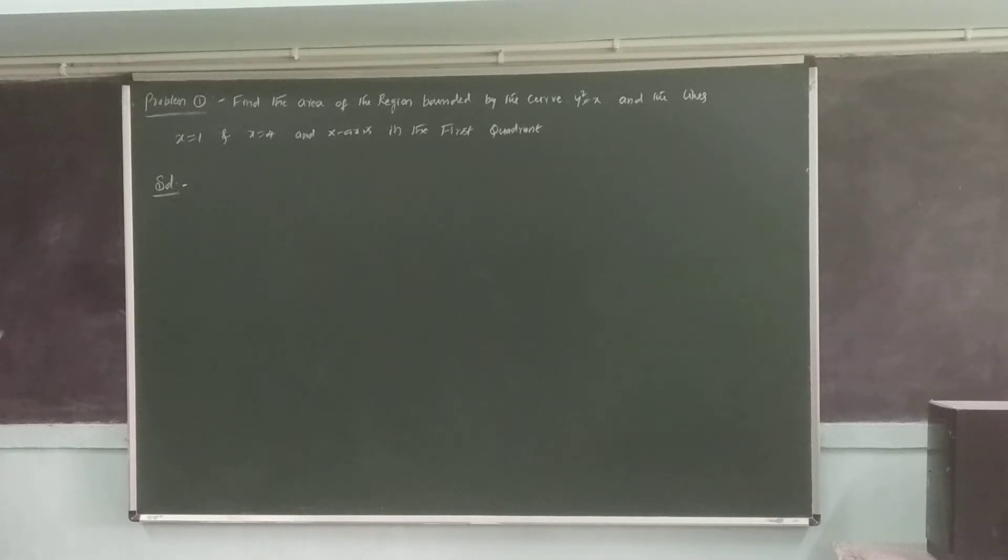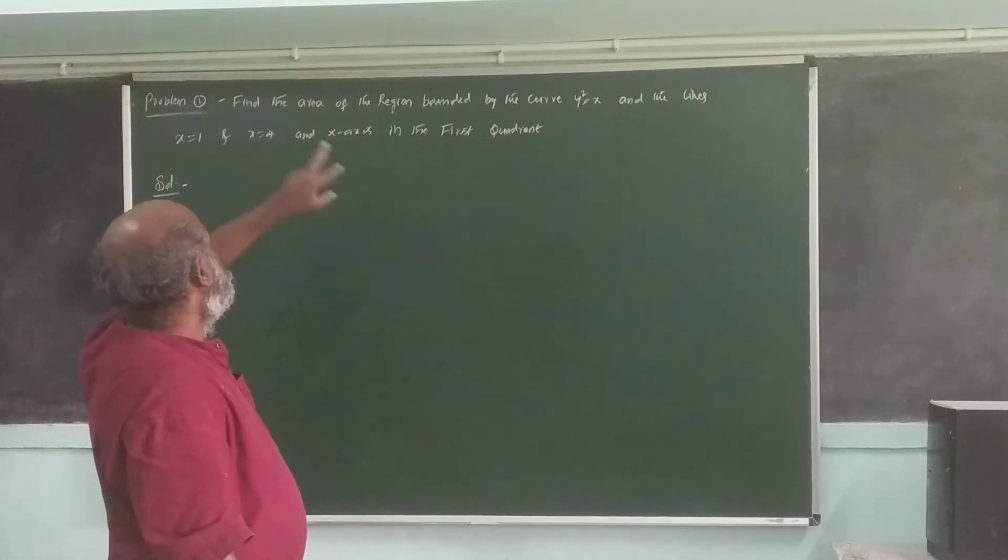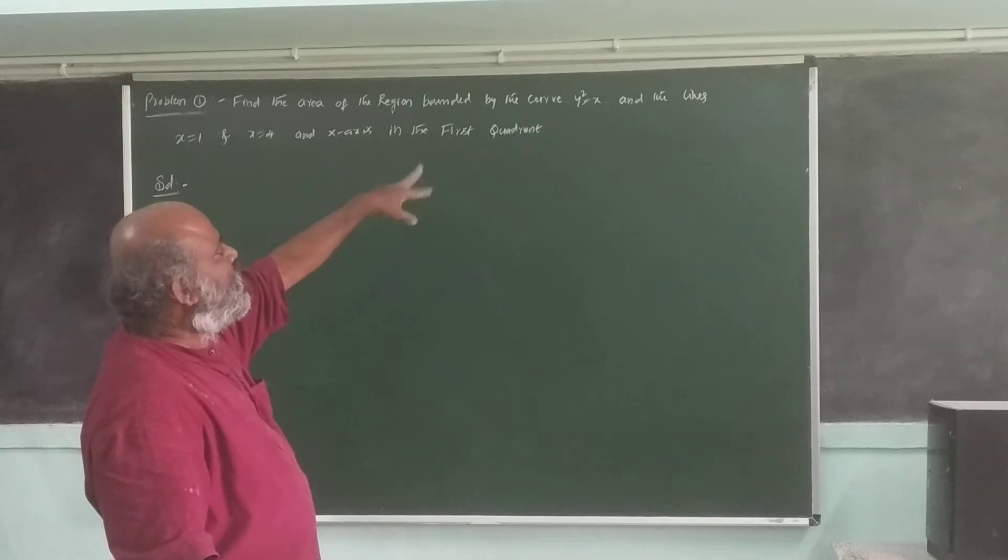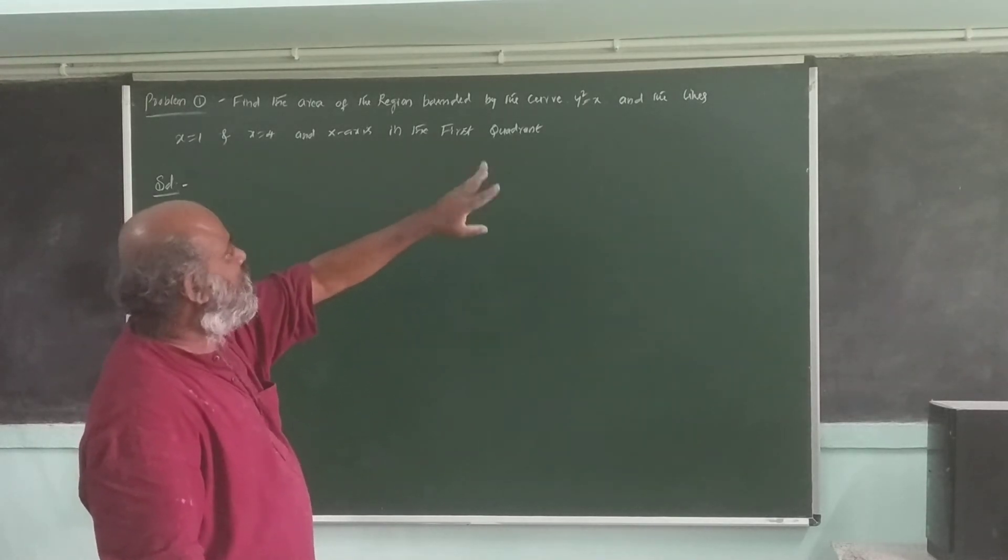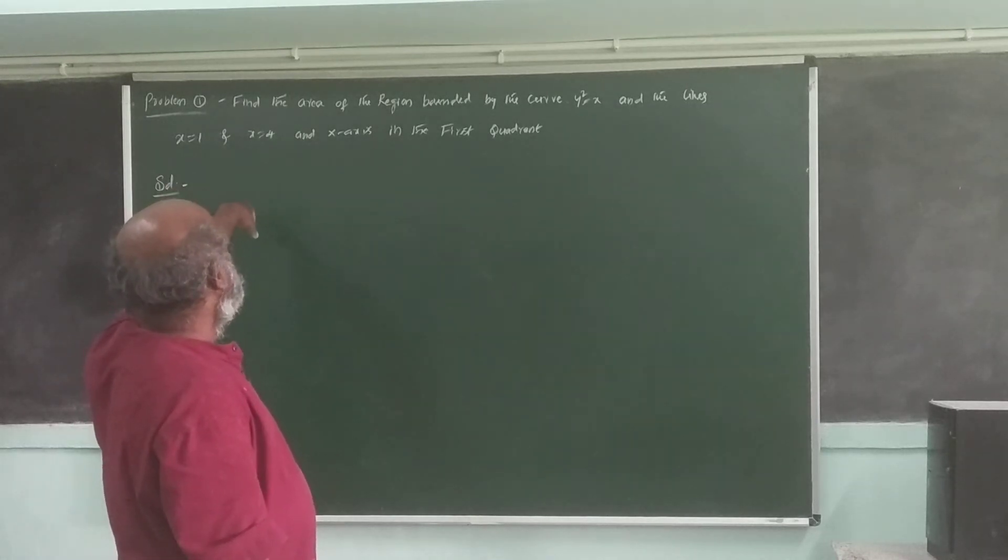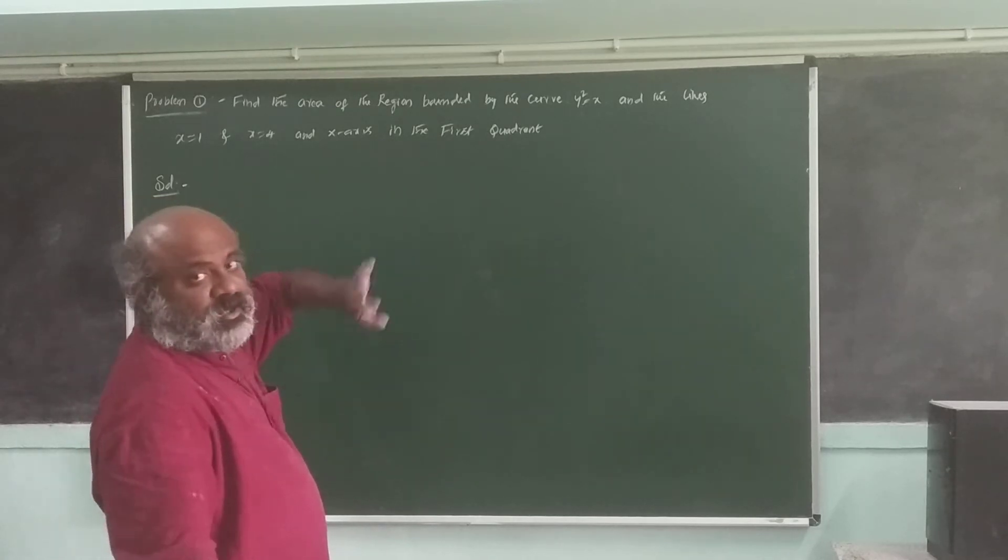The problem is the first most important question. Find the area of the region bounded by the curve y square is equal to x and the lines x is equal to 1 and x is equal to 4 in the first quadrant.